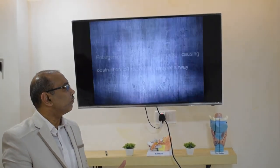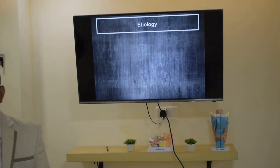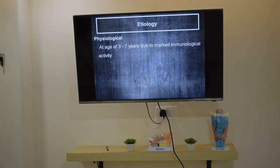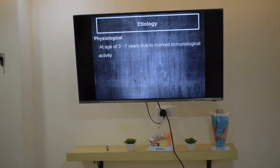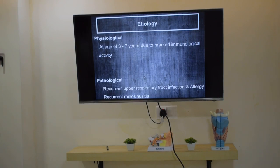Now let us go through the etiology. It can be physiological or pathological. Adenoid hypertrophy is a disease of children. The physiological reason is that between ages 3 and 7, when children are more exposed to the outer world — especially going to preschool — immunological activity increases, so the adenoid becomes bigger in size.